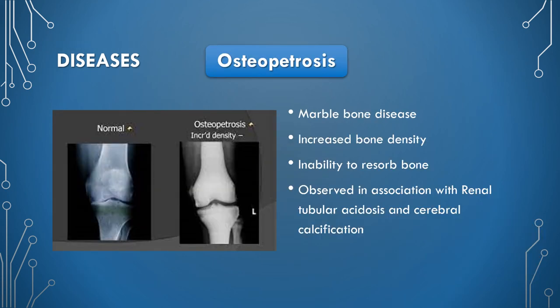Osteopetrosis, also known as marble bone disease, is characterized by increased bone density. This is primarily due to the inability to resorb bone. As shown in the picture, normal bone and osteopetrotic bone with increased density can be compared. This condition is observed in association with renal tubular acidosis due to a defect in the enzyme carbonic anhydrase, and cerebral calcification.